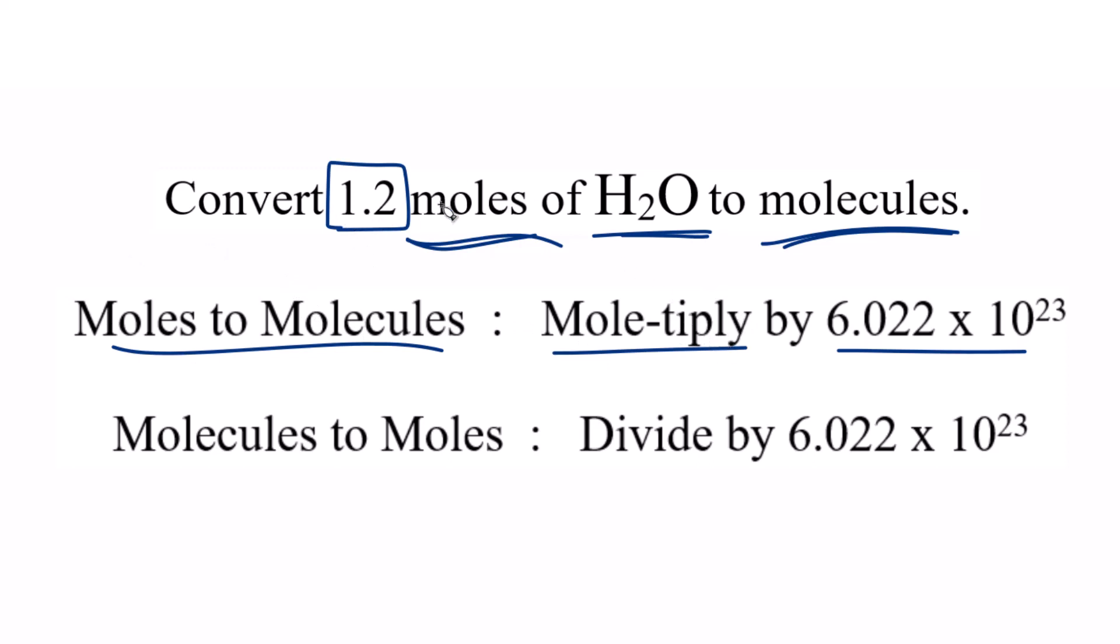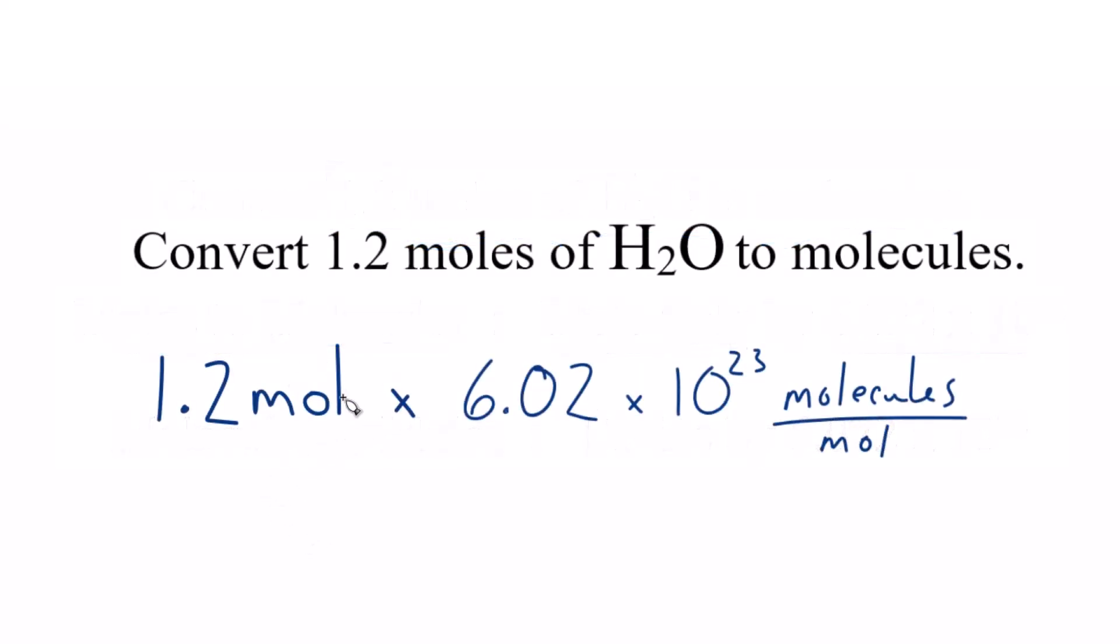We're going to take 1.2 moles, and we're going to multiply it by Avogadro's number, like this. So we multiply our moles times 6.02 times 10 to the 23rd. And you'll note we have moles on the top and the bottom. Those are going to cancel out. We're going to be left with molecules. That makes sense. We're trying to find molecules of water here.